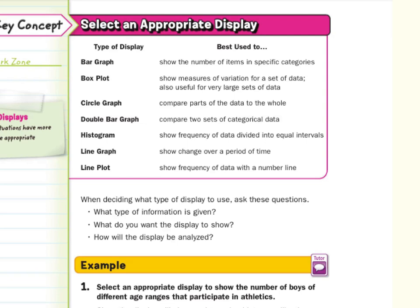A double bar graph compares two sets of categorical data. A histogram shows frequency of data divided into equal intervals. A line graph shows change over a period of time, while a line plot shows frequency of data with the number line.